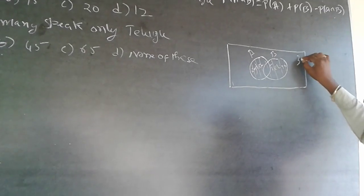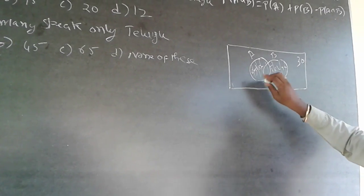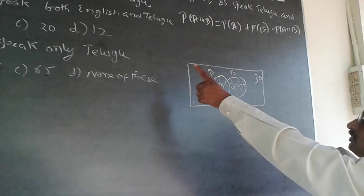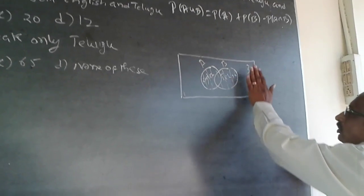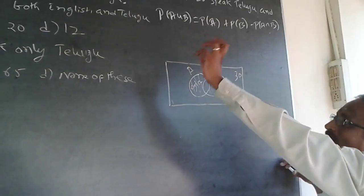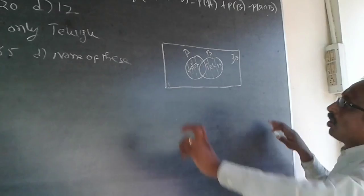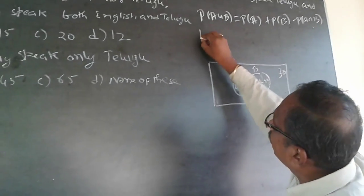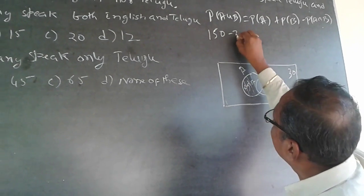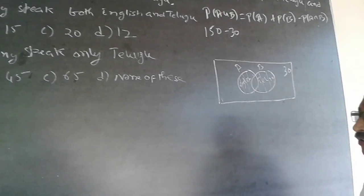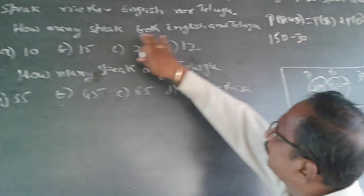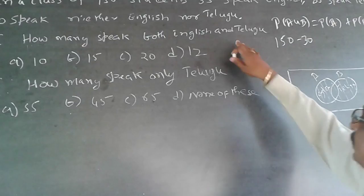30 people do not appear in either English or Telugu because it says 30 speak neither. So 30 will not find a place here. I have 150 students total, so 150 minus 30 equals 120, which is A union B.